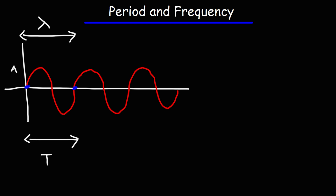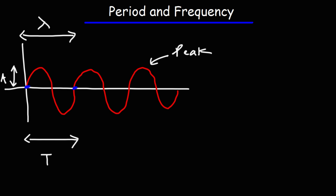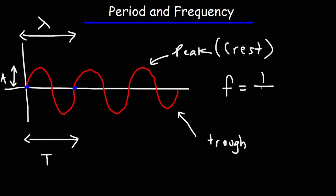The amplitude is one-half the distance between the peak and a trough. The peak is the top part of the wave and the trough is the bottom part. The peak of the wave is also known as the crest, so perhaps you've heard of the expression 'wave crest' — that's the top part of the wave.